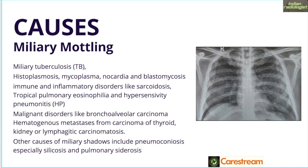In the elderly, you are looking at malignant disorders like bronchoalveolar carcinoma and hematogenous metastasis from carcinoma of the thyroid, kidney, or even lymphangitic carcinomatosis. Some other causes of miliary shadows can include pneumoconiosis — although those nodules will be slightly larger — and silicosis and pulmonary siderosis. Now we have to understand the difference between miliary mottling, pulmonary micronodules, and pulmonary masses.